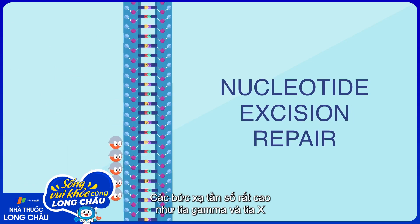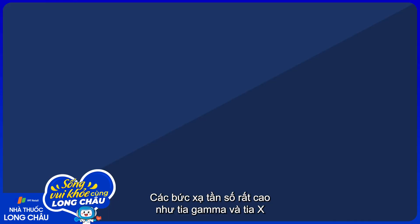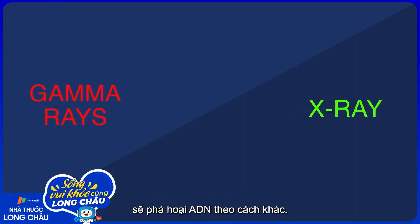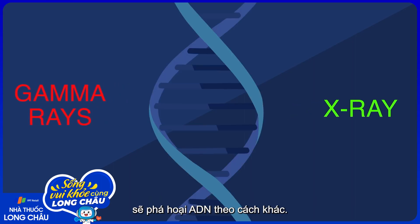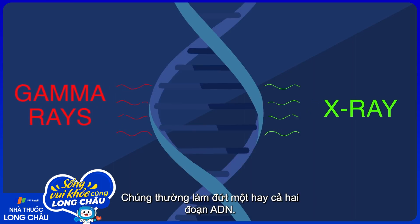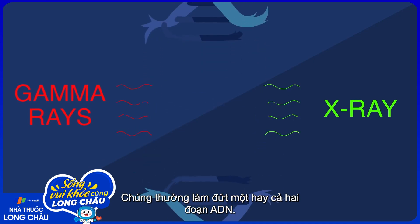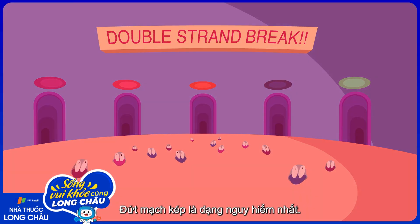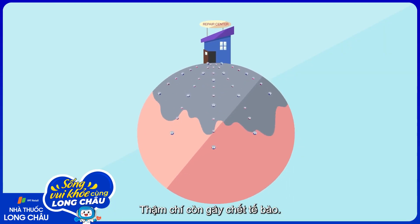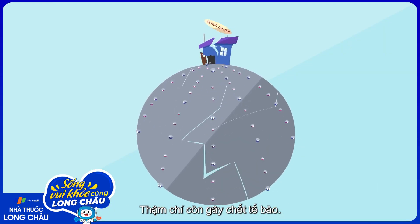Very high-frequency radiation, like gamma rays and x-rays, cause a different kind of damage. They can actually sever one or both strands of the DNA backbone. Double strand breaks are the most dangerous — even one can cause cell death.